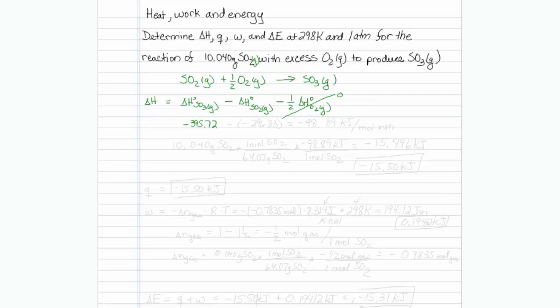And for SO2, it is minus 296.83. And that's a minus, a minus, so that's a plus. I will put that into my calculator. And the answer is minus 98.89 kilojoules per mole of reaction as written.